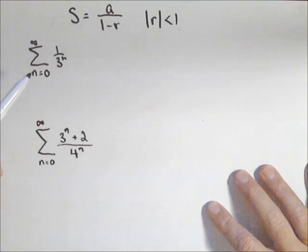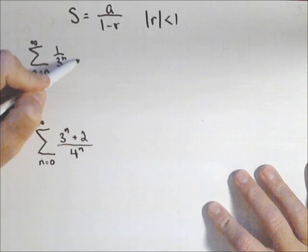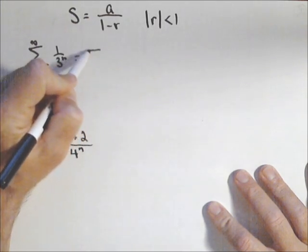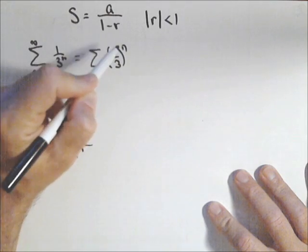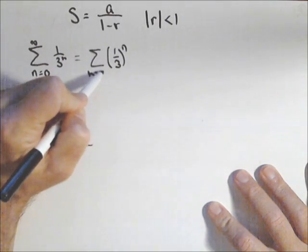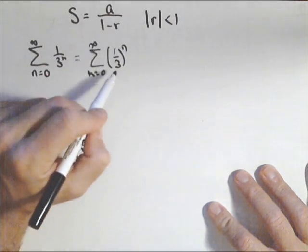So a couple ways from which they can be written. In this one we go from 0 to infinity of 1 over 3 to the n. Well that we could if we wanted to rewrite as 1 third to the n. So what that shows us is our common ratio is 1 third.